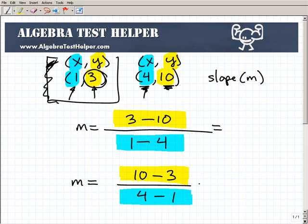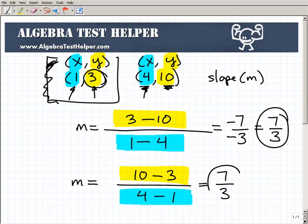So let's finish this out. I get 3 minus 10 here is negative 7, and 1 minus 4 is negative 3. And a negative divided by a negative is positive, or 7 thirds. So that is your slope. But you can see here, it still works out the same way. If I have 10 minus 3, that's 7, and 4 minus 1 is 3, or 7 thirds. So it worked out the same way.